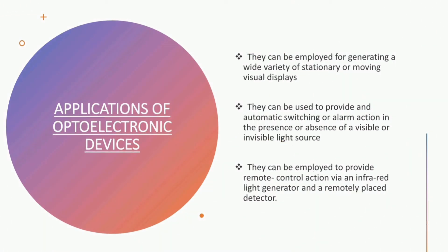Speaking about the applications of optoelectronic devices: optoelectronic devices can be employed for generating a wide variety of stationary or moving visual displays. They can be used to provide an automatic switching or alarm action in the presence or absence of a visible or invisible light source. Optoelectronic devices can also be employed to provide remote control action via an infrared light generator and a remotely placed detector.